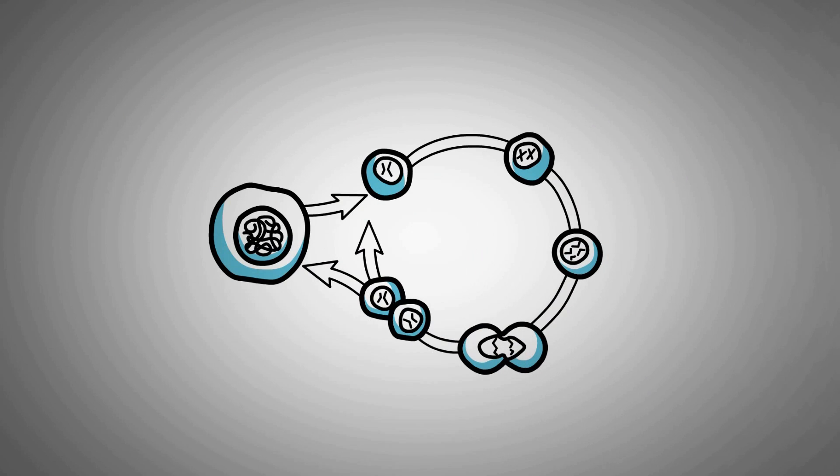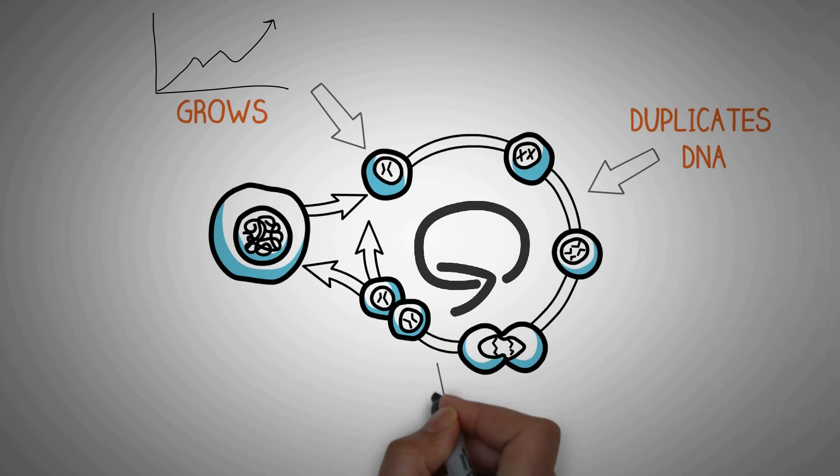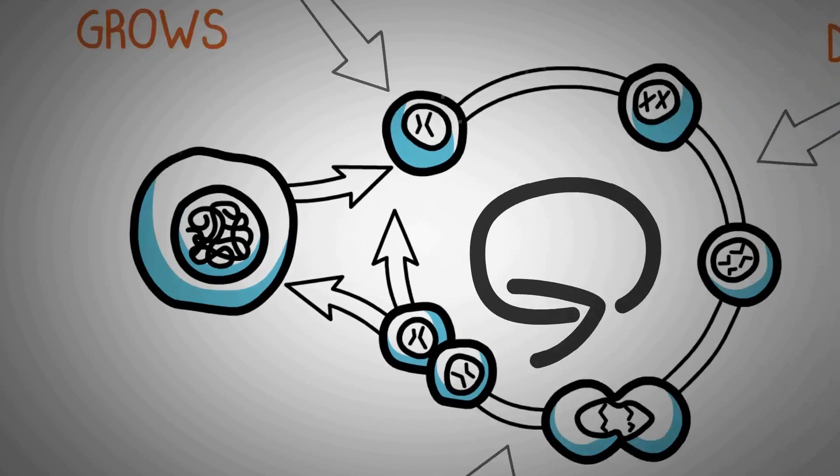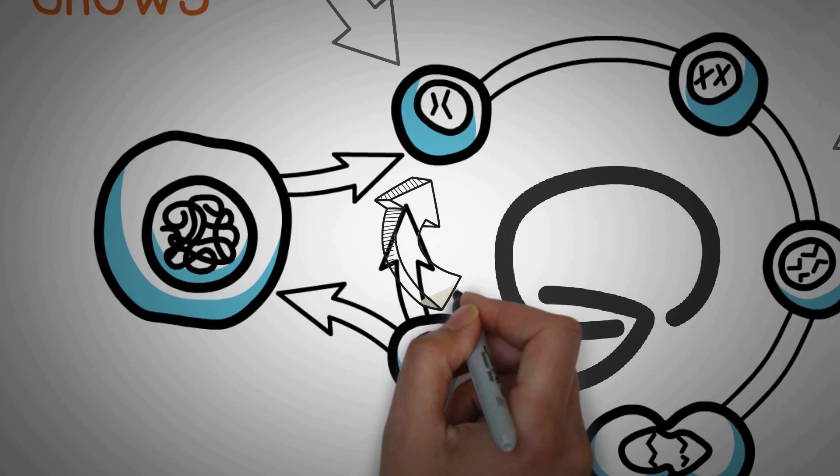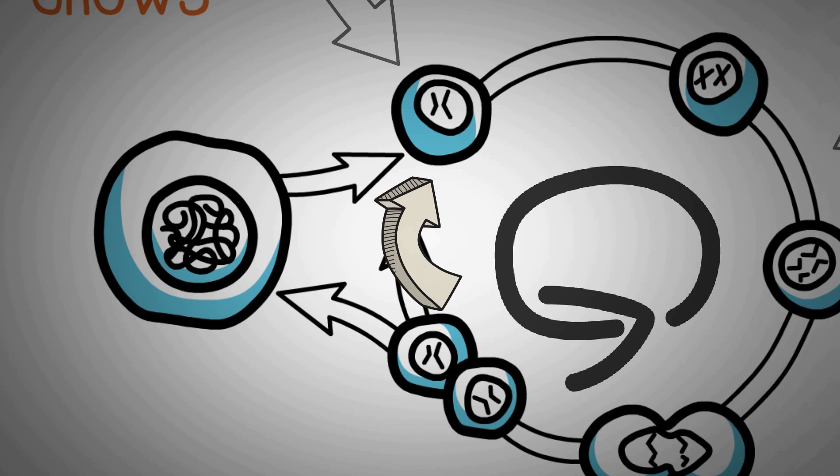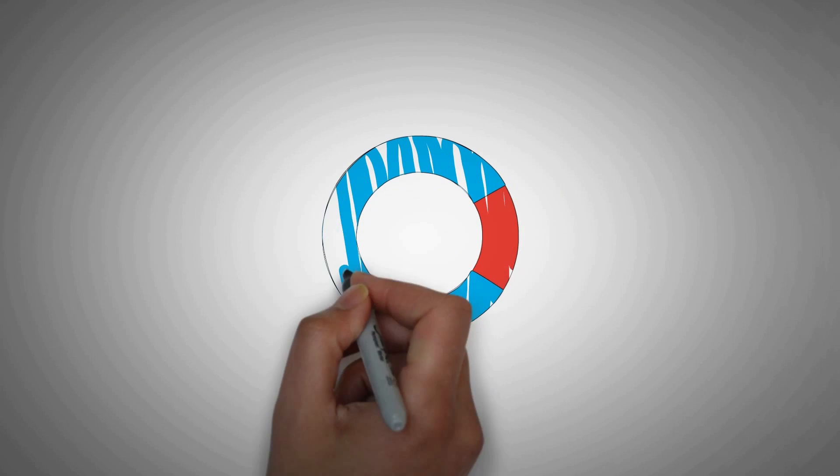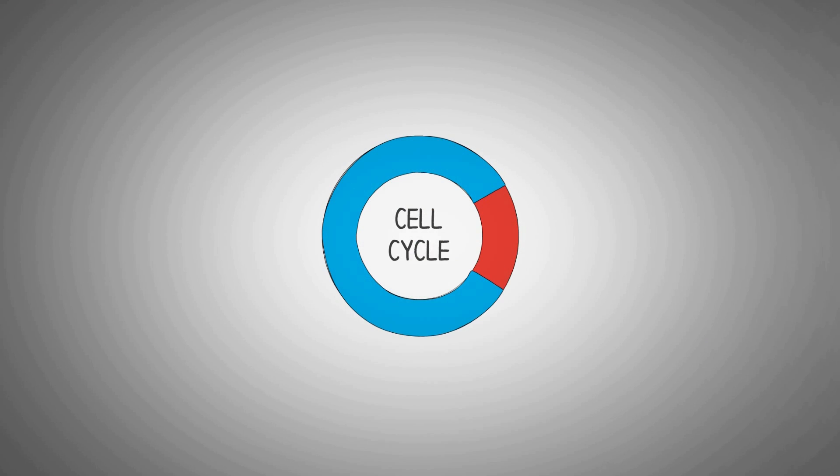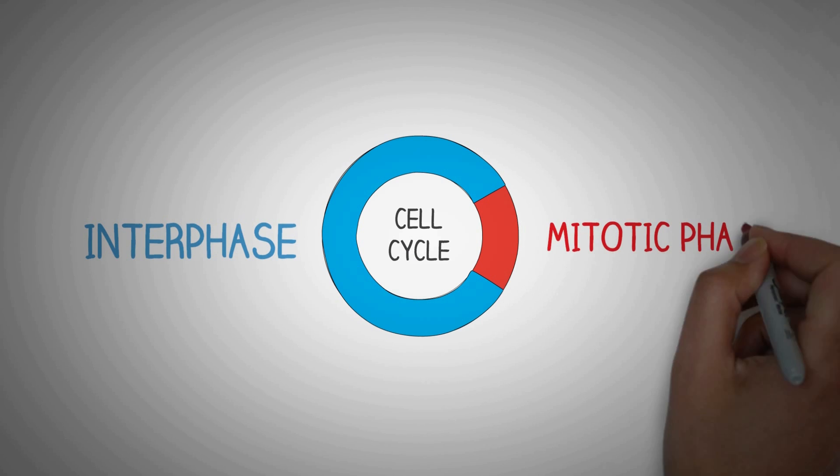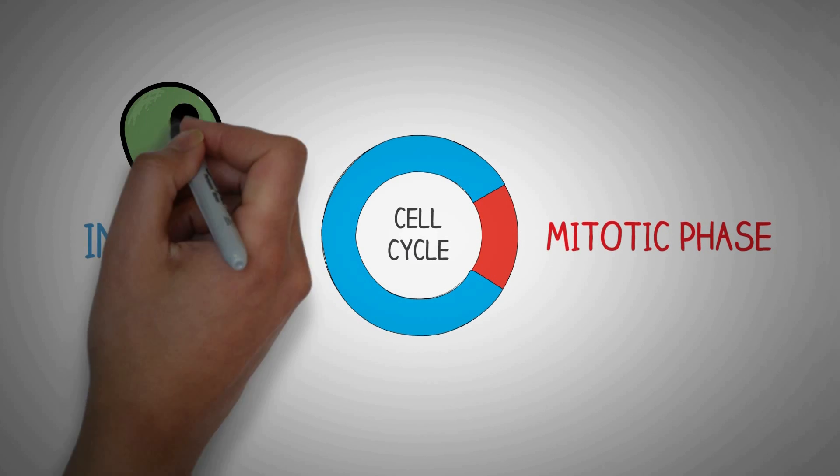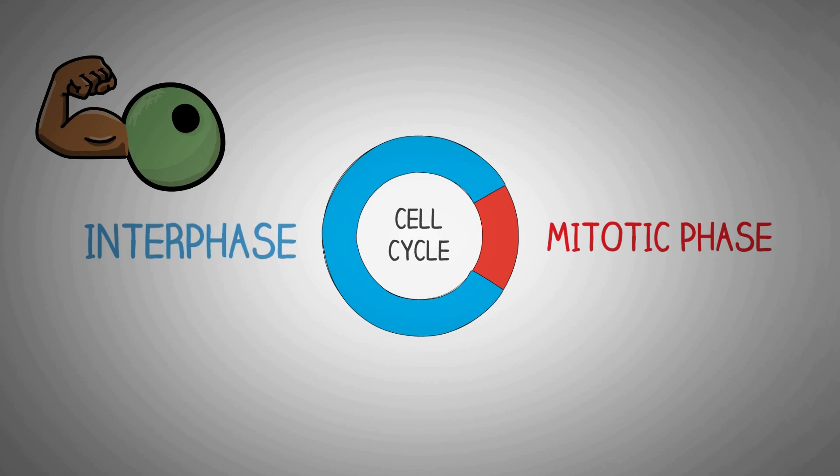So now let's look at how these cells divide by the process known as cell cycle. The cell cycle is a circular pathway in which the cell grows, copies its genetic material and splits into two daughter cells. These daughter cells undergo the same cell cycle to produce more new cells. Now if we look at the cell cycle, it can be basically divided into two phases: the interphase during which the cell prepares for division and the mitotic or the M phase during which the cell actually divides.